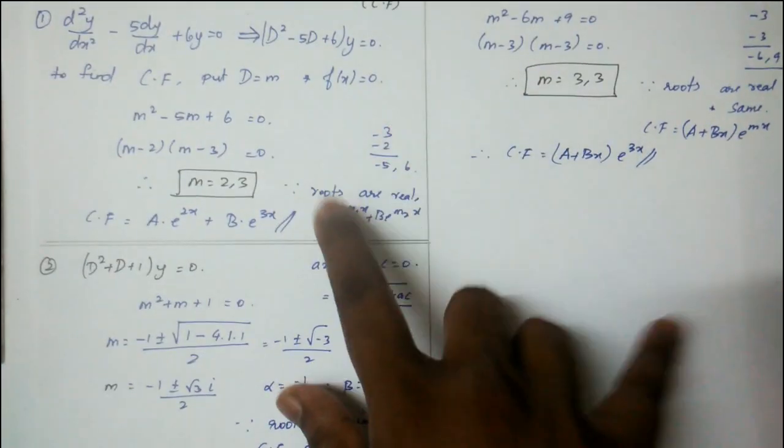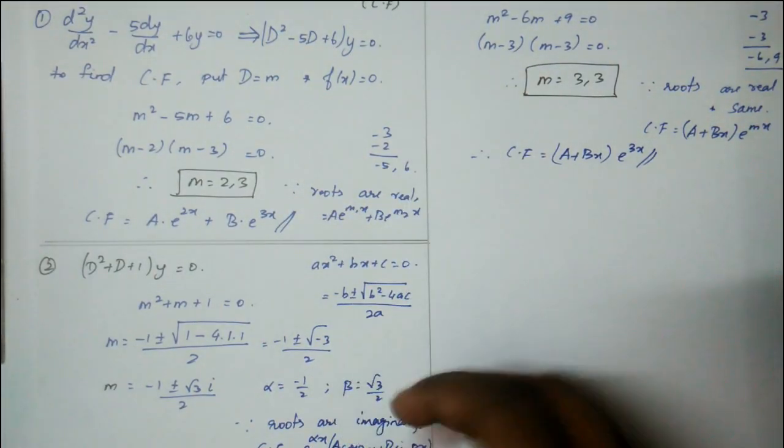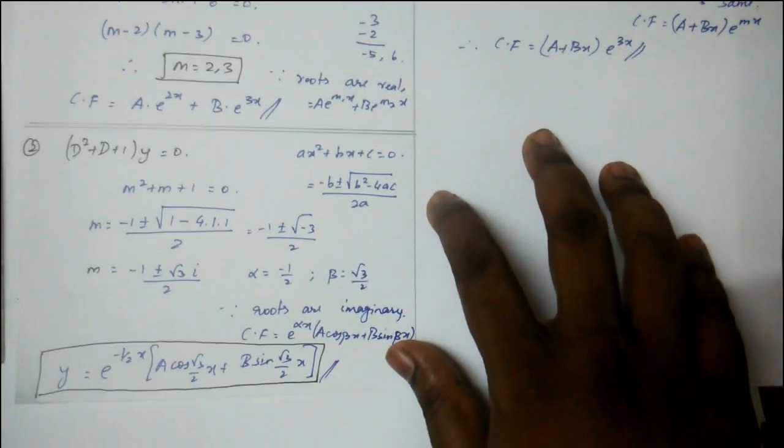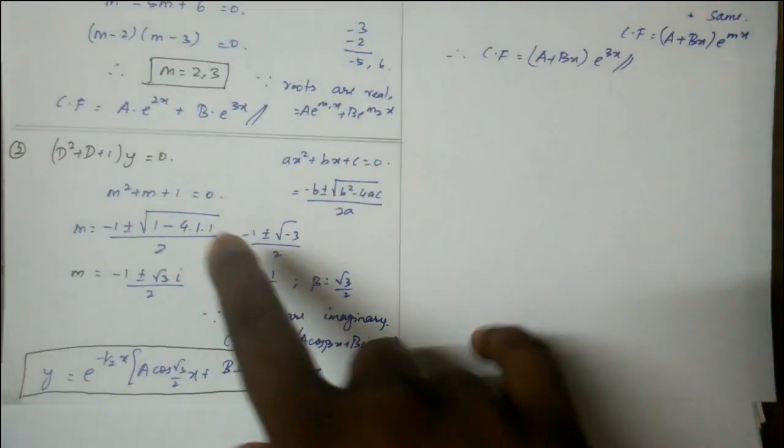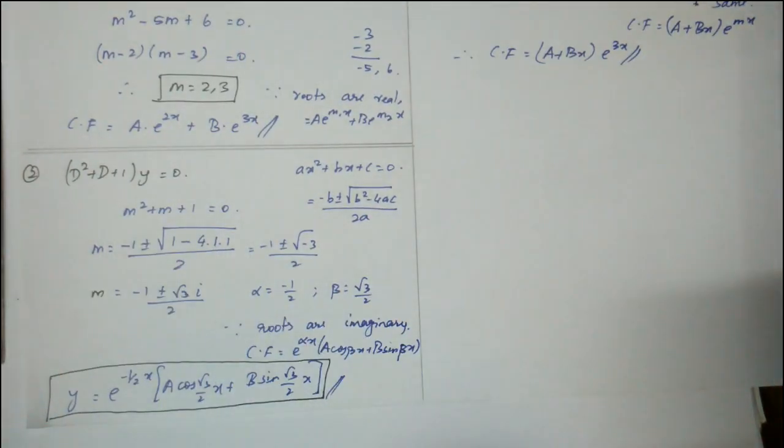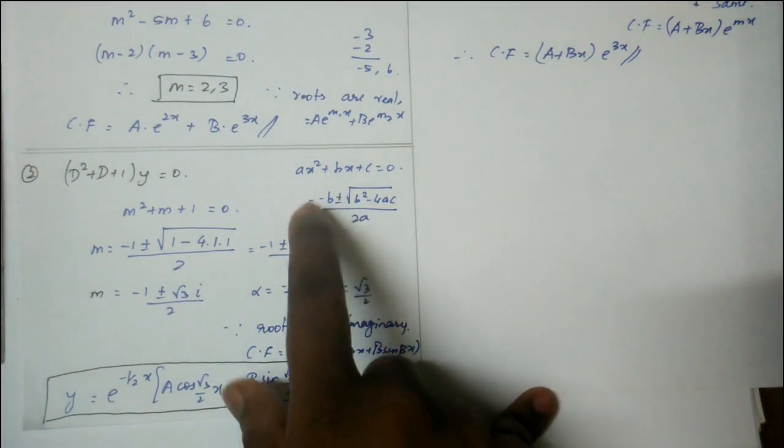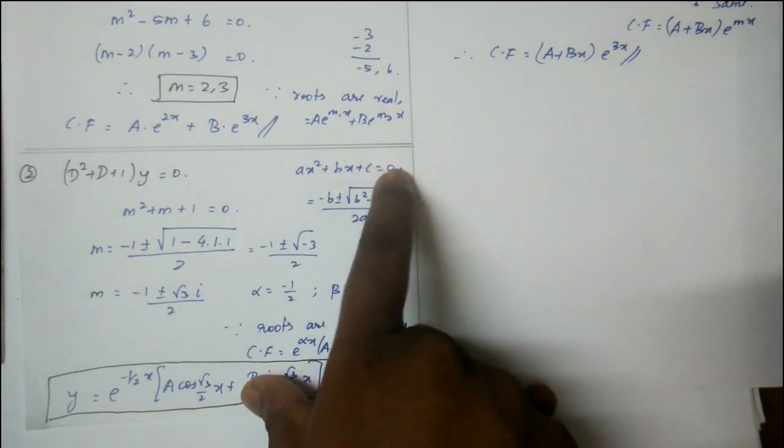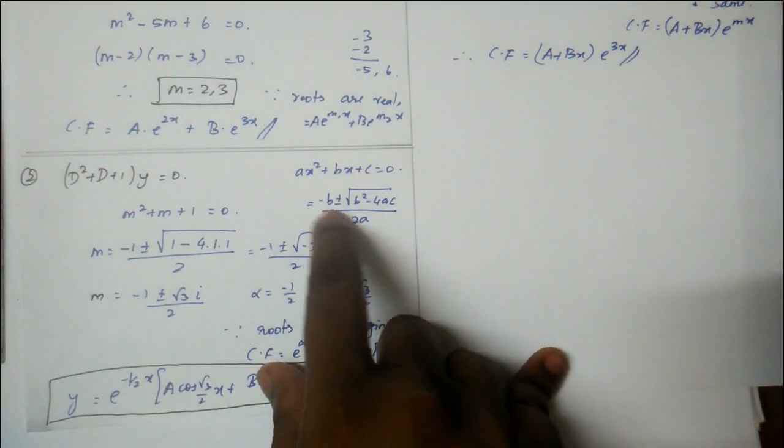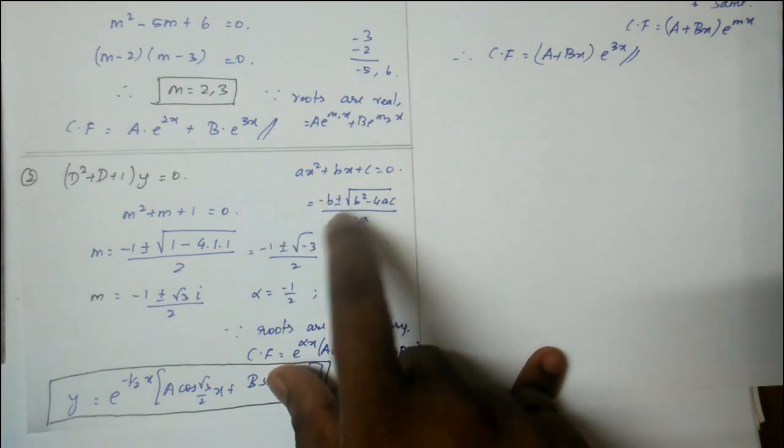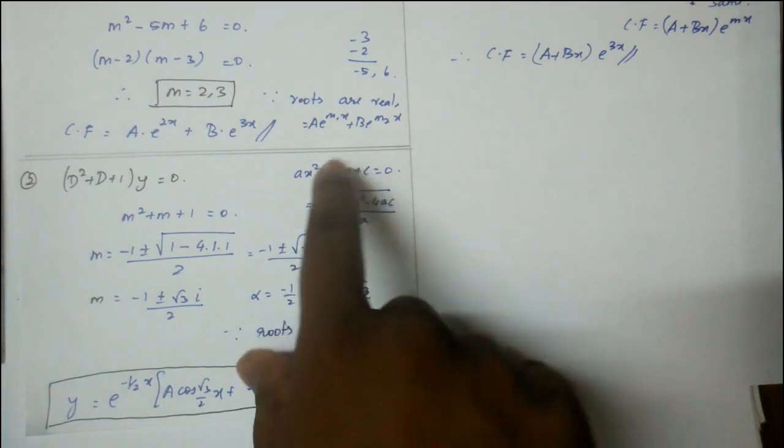If the roots are imaginary, what can be done? For imaginary roots, use a quadratic equation. The quadratic formula is (-b ± √(b²-4ac))/2a.